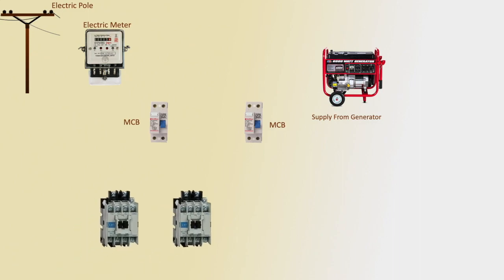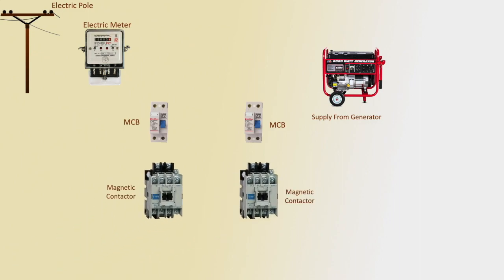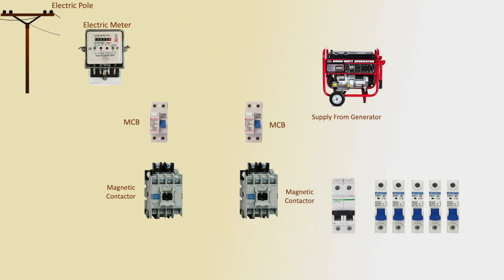Two magnetic contactors are used: one magnetic contactor for the PDP line and a second magnetic contactor for the generator line. These connect to the HDB — the switch distribution board — meaning the house board. Two HDB box connections are made, with a neutral bar providing the neutral outgoing to the main line.